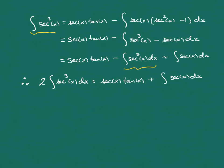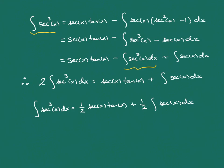So the integral of sec³(x) dx equals one-half sec(x)tan(x) plus one-half the integral of sec(x) dx. We've kicked the can down the road — we've gone from a power of 3 on the left side to a first power on the right. So things are better once we figure out what the integral of secant is.